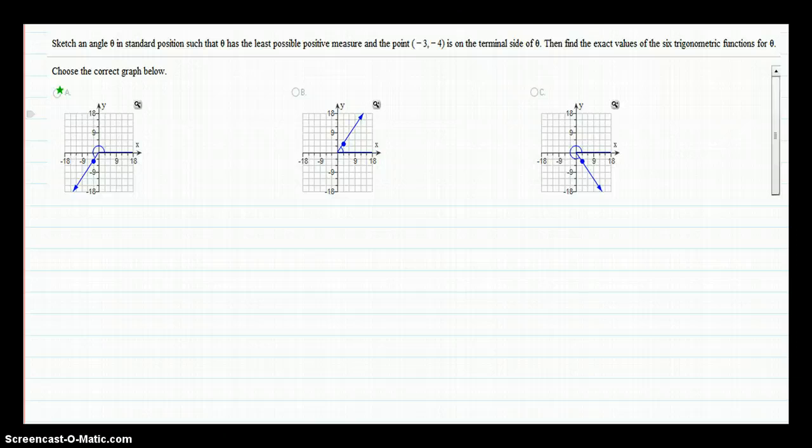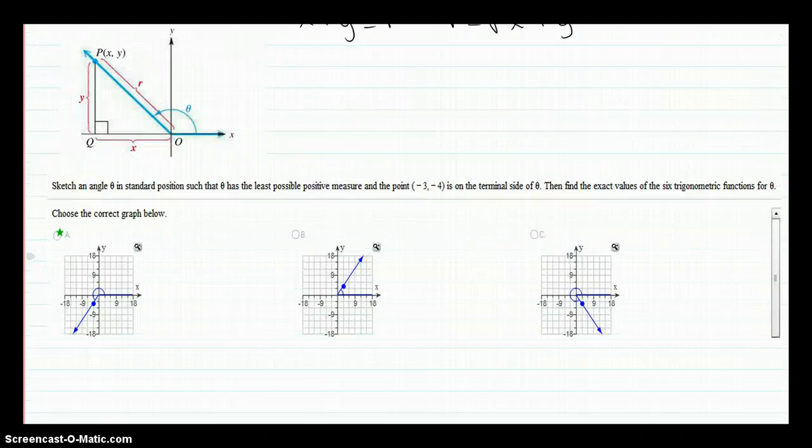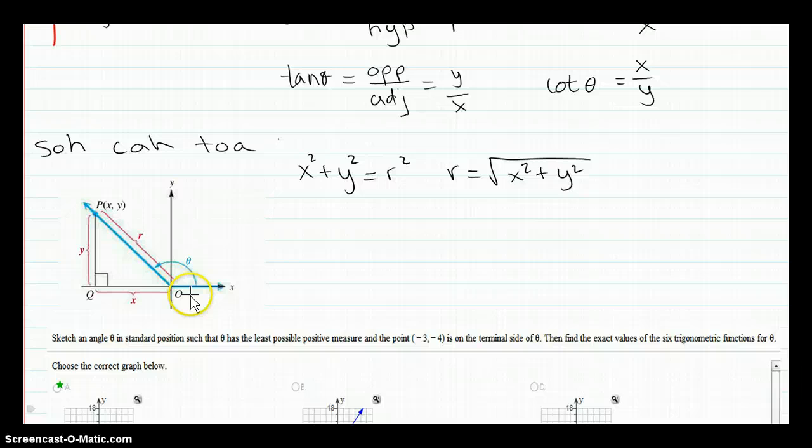Okay, so I'm going to end this with a homework problem from your homework. Sketch the angle theta in standard position such that theta has the least possible positive measure and the point negative 3, negative 4 is on the terminal side of theta. What that means is, if you look on here, this is called the terminal side of theta. x, y is on the terminal side. Here's theta.